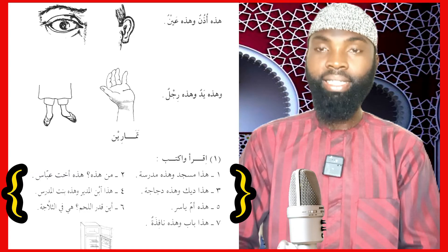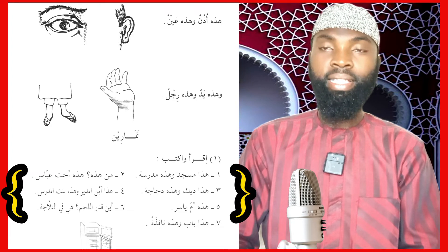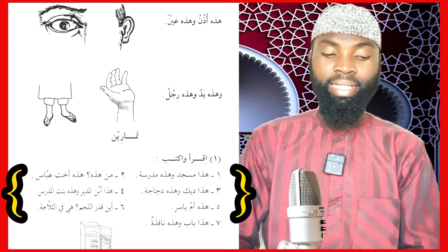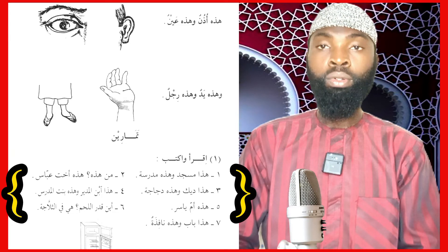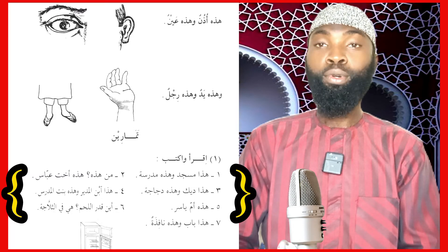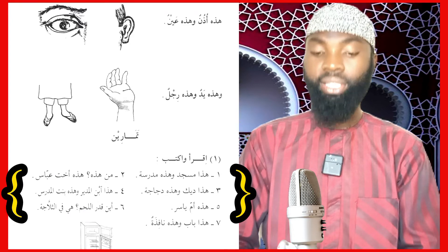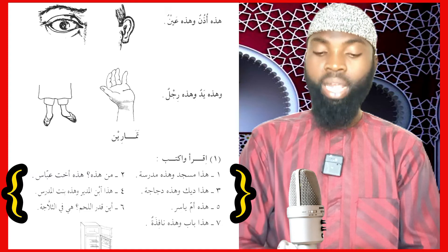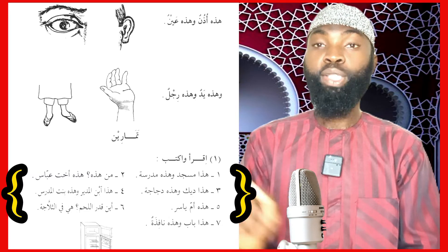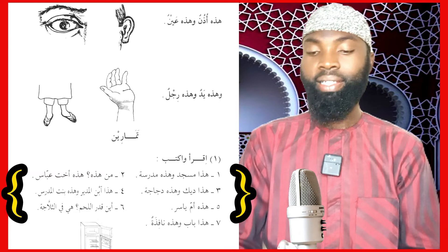هَذَا دِيكٌ وَهَذِهِ دَجَاجَةٌ — this is a cock and this is a hen. هَذَا ابْنُ الْمُدِيرِ وَهَذِهِ بِنْتُ الْمُدَرِّسِ — this is the principal's son and this is the teacher's daughter. هَذِهِ أُمُّ يَاسِرٍ — this is Yasir's mother. أَيْنَ قِدْرُ اللَّحْمِ؟ — where is the meat pot? فِي الثَّلَّاجَةِ — it is in the refrigerator. هَذَا بَابٌ وَهَذِهِ نَافِذَةٌ — this is a door and this is a window. بَابٌ is masculine and نَافِذَةٌ is feminine.